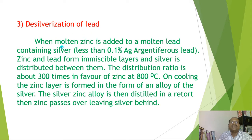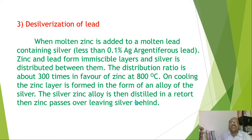This molten zinc containing silver is later distilled using a retort. The molten zinc is distilled off, leaving silver behind. In this way, the distribution law plays an important role in the extraction of silver from argentiferous lead.